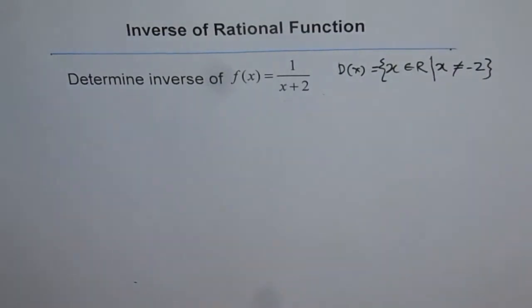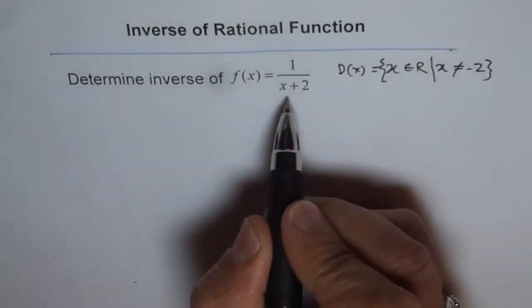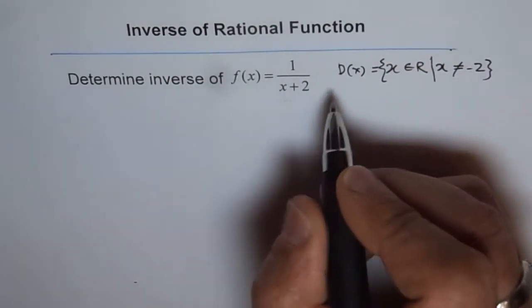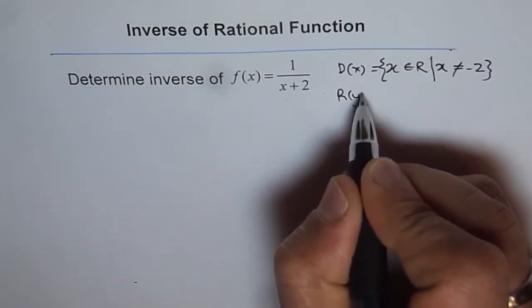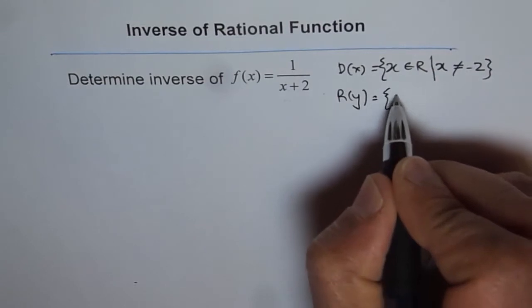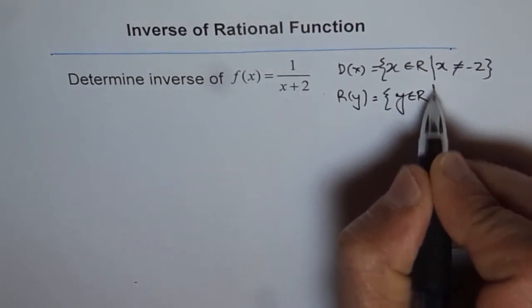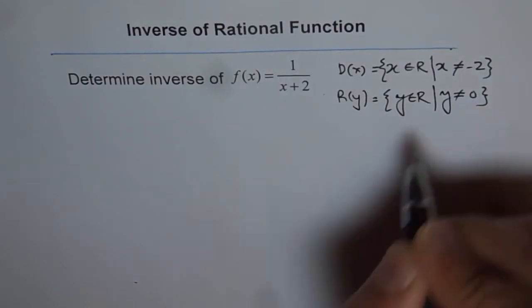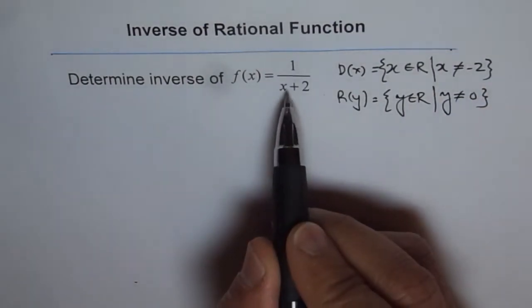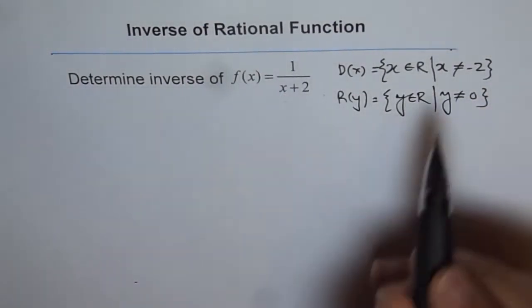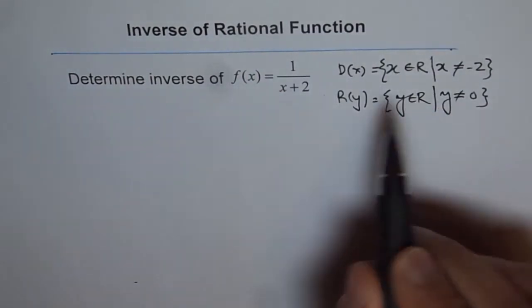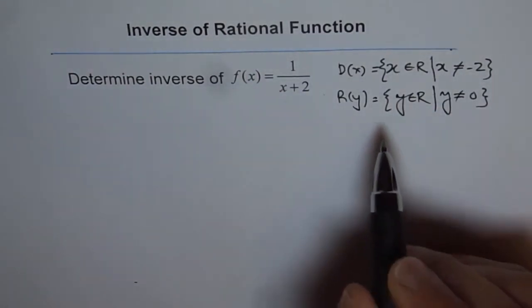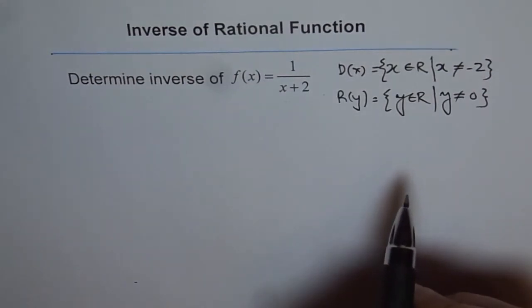It has a vertical asymptote at x equals minus 2. And the range of this function is y belongs to real numbers but y is not equal to 0, since we have a horizontal asymptote at y equals 0. The function approaches zero. That is about the given function.